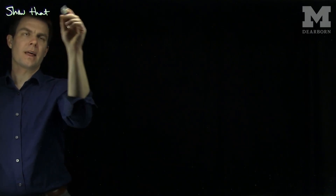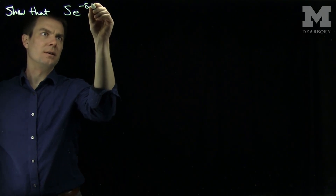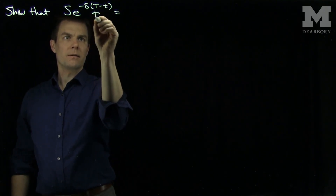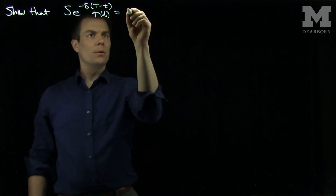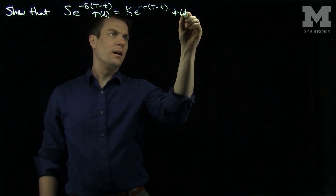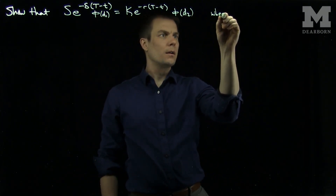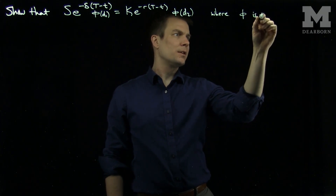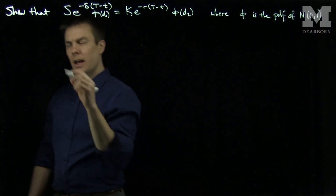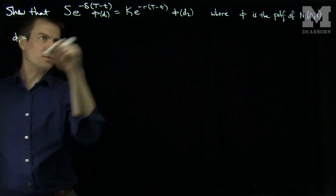Hello students. In this video we'll see an important formula that's used to compute the deltas of call options and put options. We will show that S·e^(-δ(T-t))·φ(d1) is equal to K·e^(-r(T-t))·φ(d2), where φ is the PDF of a Normal(0,1) random variable, and d1 and d2 are from the Black-Scholes formula.